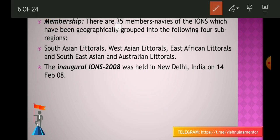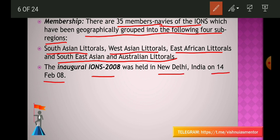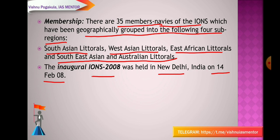There are 35 member navies of IONS, geographically grouped into four sub-regions: South Asian littorals, West Asian littorals, East African littorals, and Southeast Asian and Australian littorals. The inaugural IONS was held in New Delhi, India on 14th February 2008 — so the first statement is wrong. Updated info: the 3rd meeting of IONS Working Group on Humanitarian Assistance and Disaster Relief (HADR) was held at Eastern Naval Command, Vishakhapatnam, from 27–28 September 2018.